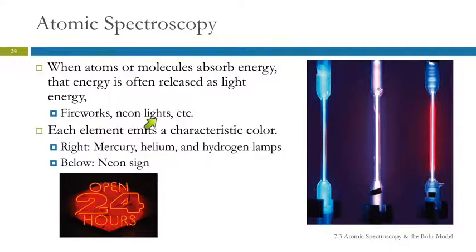Examples of this are fireworks, neon lights. So this is a photograph of a neon light, and that actually contains the element neon. Neon gas, when you zap it with electricity, gives off that very bright orange color. And that is characteristic of neon.